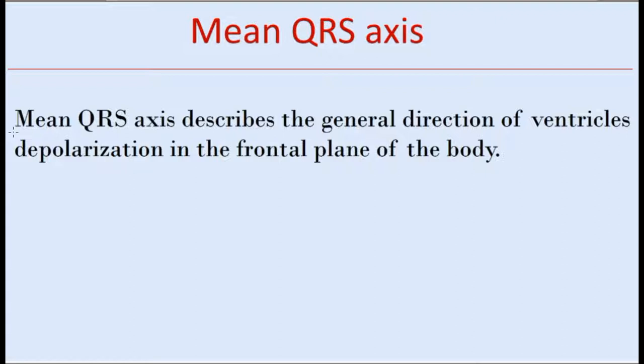The depolarization stimulus spreads through the ventricles in different directions from instant to instant. The term mean QRS axis describes the general direction of ventricle depolarization in the frontal plane of the body.